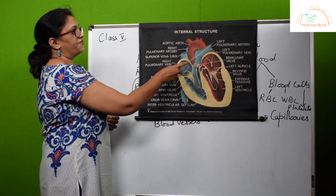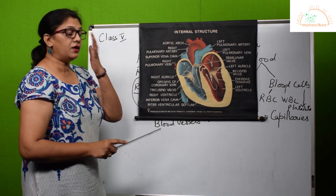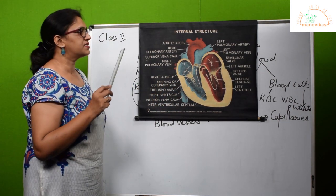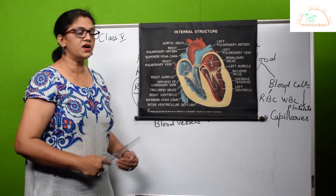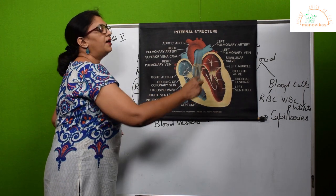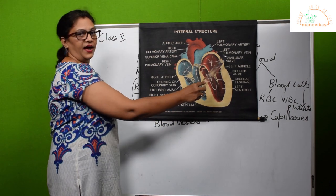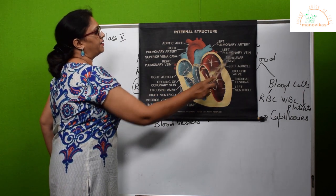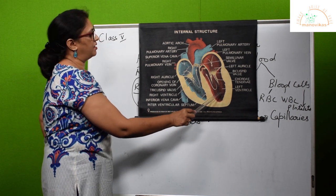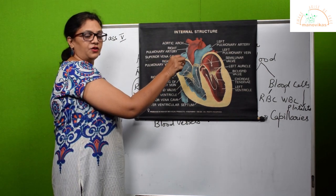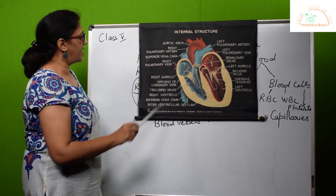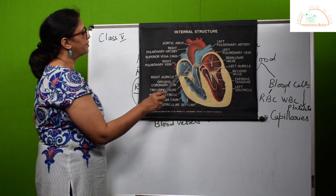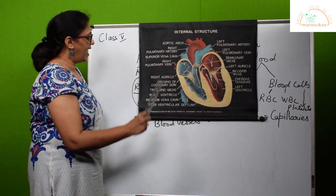From the pulmonary artery, blood goes into the lungs for the exchange of gases. Always remember: veins bring blood towards the heart and arteries take blood away from the heart. Once again: pure blood from the lungs enters the left auricle through the pulmonary vein, moves into the left ventricle, and through the aorta goes to the different parts of the body. Deoxygenated blood is brought by the veins and enters the right auricle through the superior vena cava and the inferior vena cava.